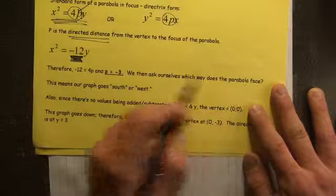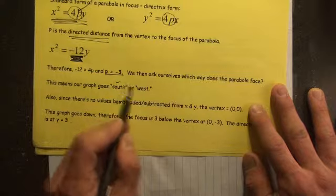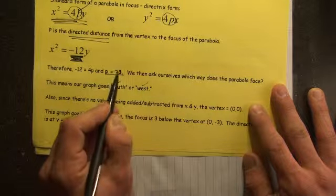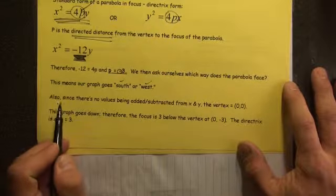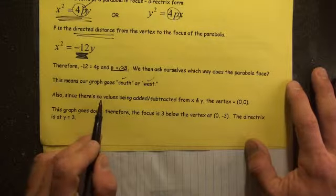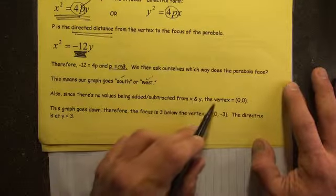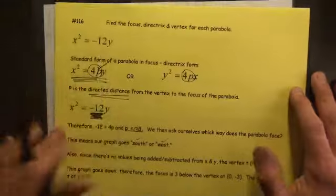This means the parabola is going to face either south or west because the P value is negative. Now since there's no values being added or subtracted from X and Y, the vertex is 0, 0.